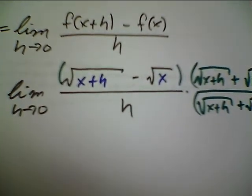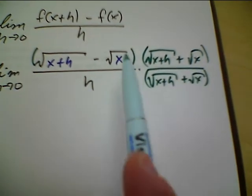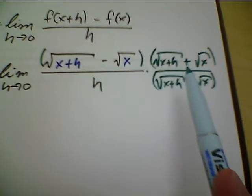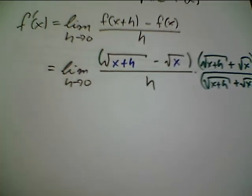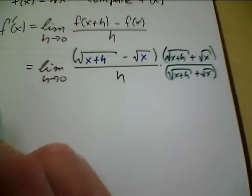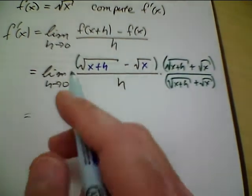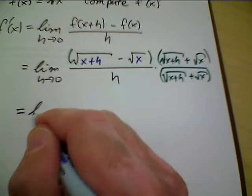So, I'll put both those in parentheses. Then you see what's going to happen is we're going to get a difference of squares in the numerator. And in the denominator, we're just going to carry through that term. So, I'll back this up.